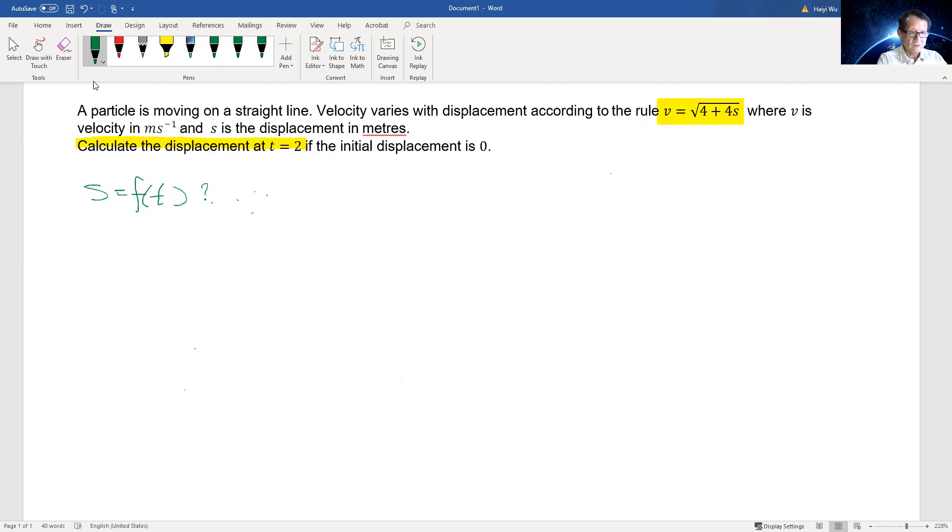We have v = √(4 + 4s). This gives the relationship between velocity and s. How do we change velocity against s into displacement against time? First, I'm going to simplify this equation. We can take the 4 out, so it becomes 2√(1 + s).